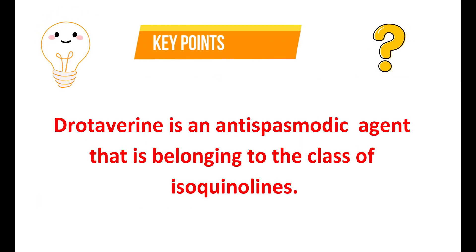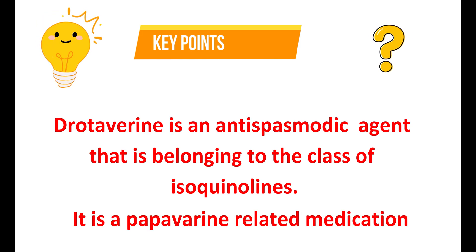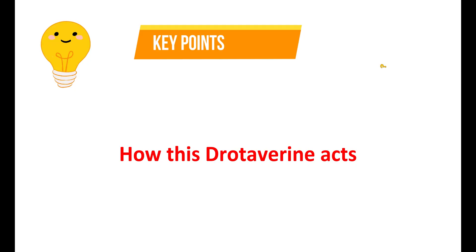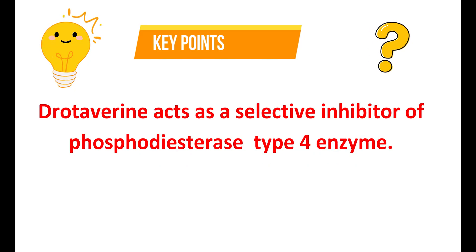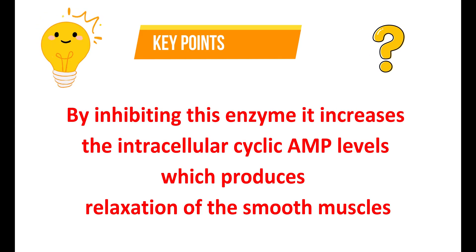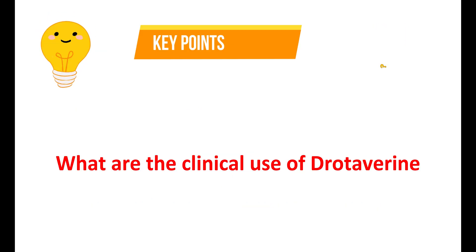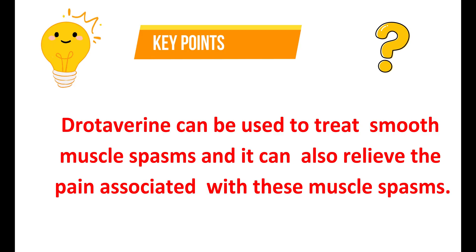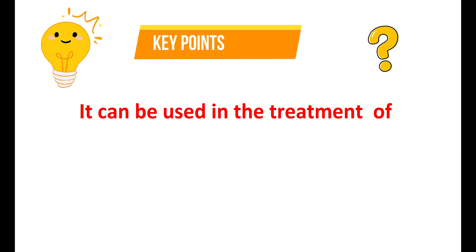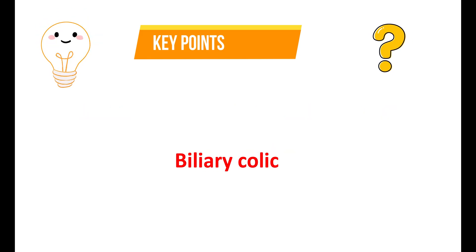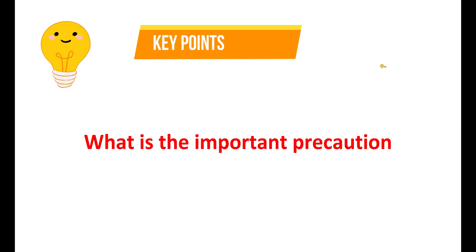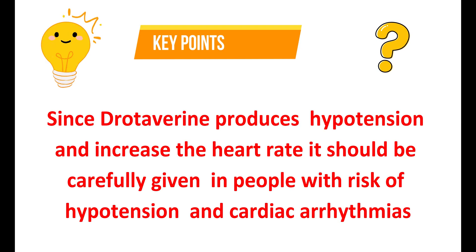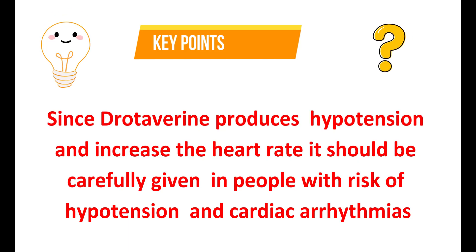What is drotavarine? Drotavarine is an antispasmodic agent belonging to the class of isoquinolines. It is a papaverine-related medication. How does drotavarine act? Drotavarine acts as a selective inhibitor of phosphodiesterase type 4 enzyme. By inhibiting this enzyme, it increases intracellular cyclic AMP levels, which produces relaxation of the smooth muscles. What are the clinical uses of drotavarine? Drotavarine can be used to treat smooth muscle spasms and relieve the associated pain. It can be used in the treatment of dysmenorrhea, renal colic, biliary colic, spastic constipation and even gastroenteritis. What is the important precaution? Since drotavarine produces hypotension and increases heart rate, it should be carefully given in people with risk of hypotension and cardiac arrhythmias.